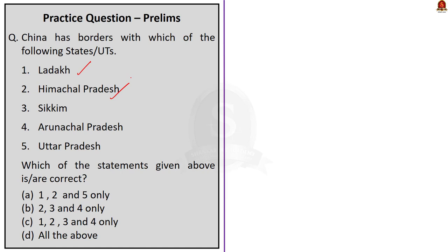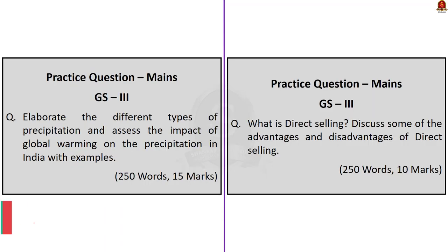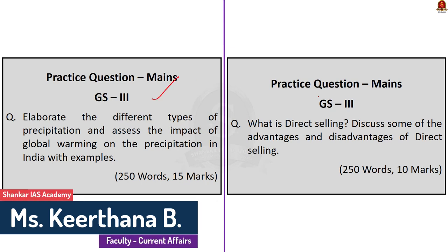Second question: China has borders with which of the following states or union territories? (1) Ladakh, (2) Himachal Pradesh, (3) Sikkim, (4) Arunachal Pradesh, (5) Uttar Pradesh. From the map, states and union territories bordering China are Ladakh, Himachal Pradesh, Uttarakhand, Sikkim, and Arunachal Pradesh. The fifth option, Uttar Pradesh, is incorrect. So the correct answer is option C: 1, 2, 3, and 4 only. Two mains questions are given for practice — write your answers and post them in the comment section.